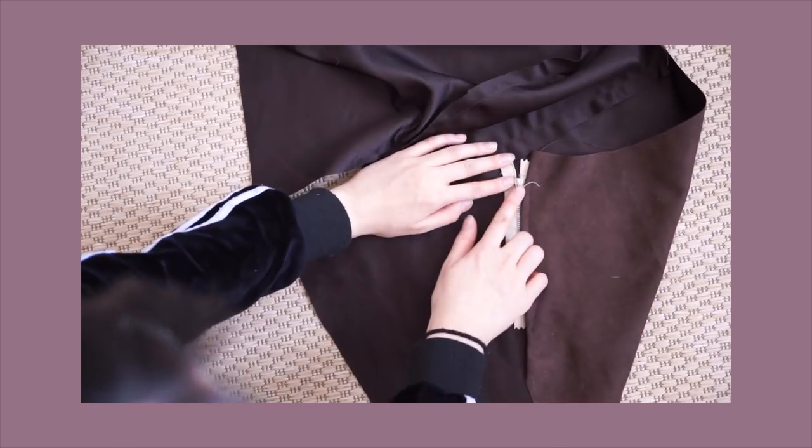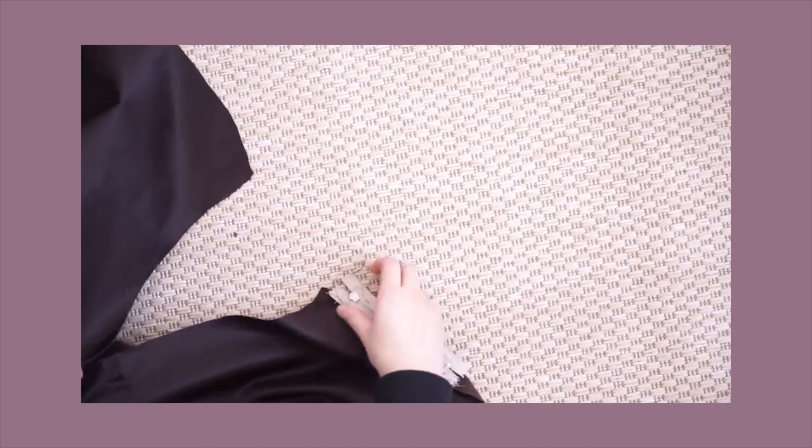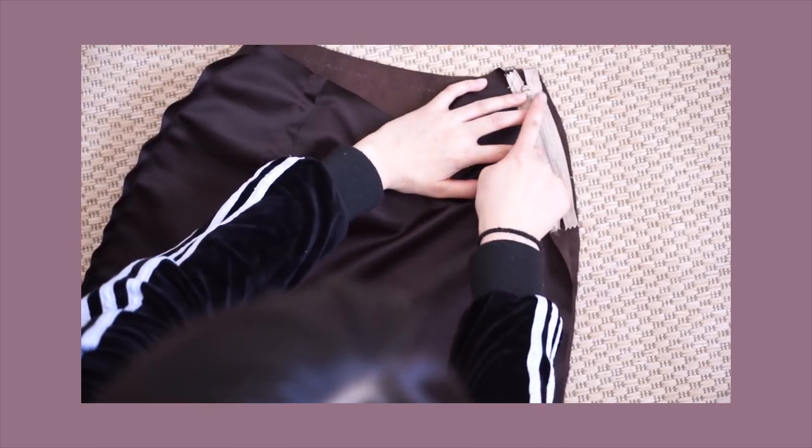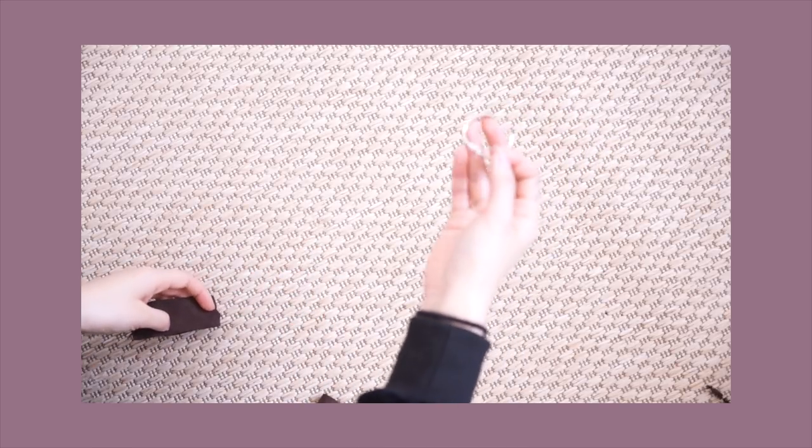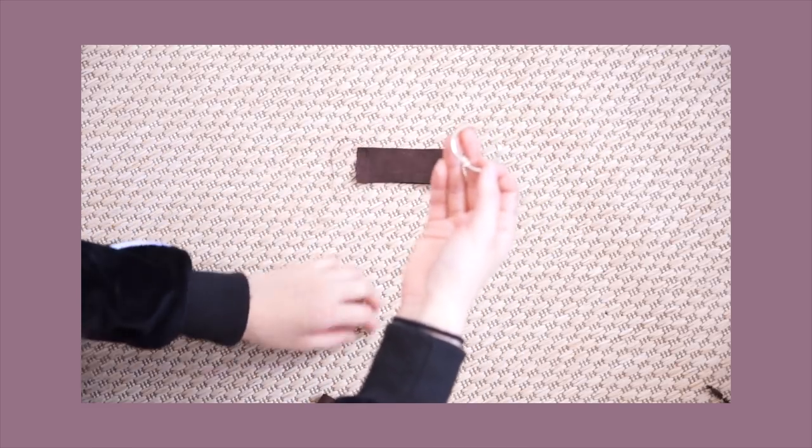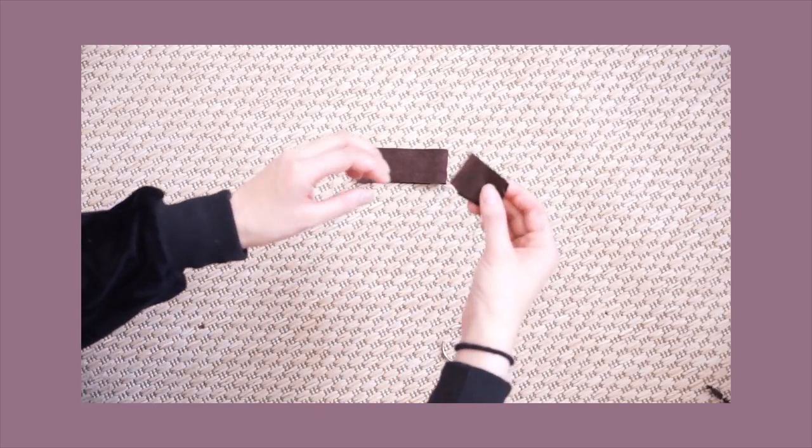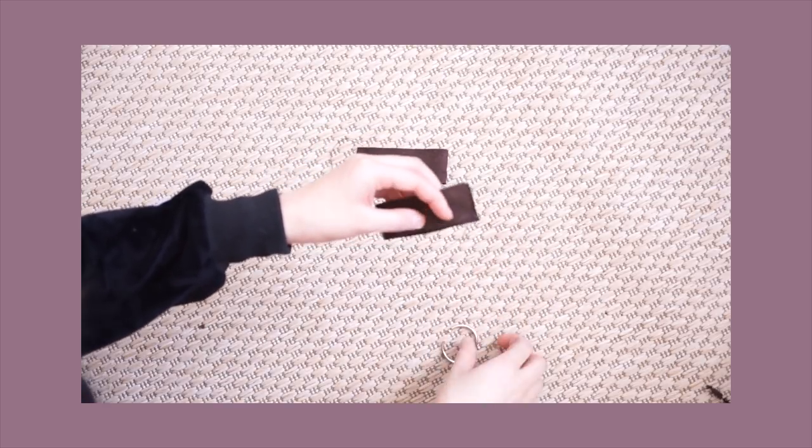Okay, now to create this detail, you're going to cut out two long and skinny rectangles of fabric. Then you're going to fold those fabric pieces and loop your metal ring inside them.